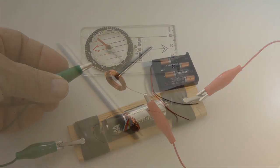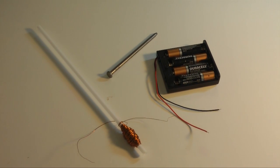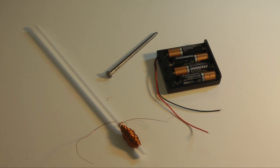I'm going to build a simple solenoid using 12 meters of fine insulated magnet wire, a 4-inch common nail, a straw, and 4 AA batteries.